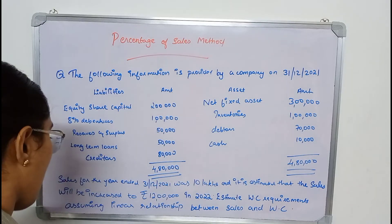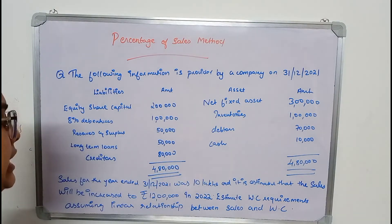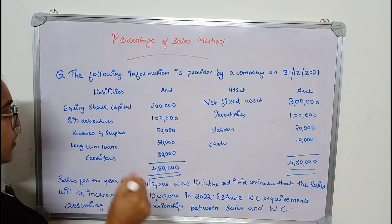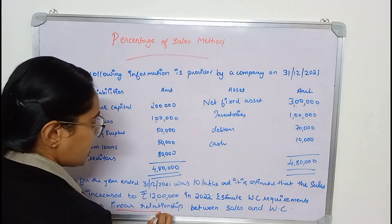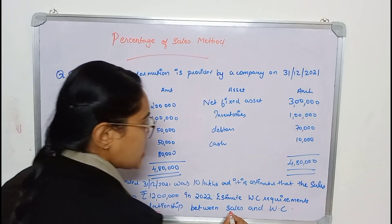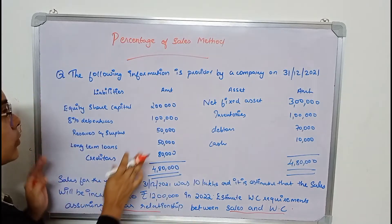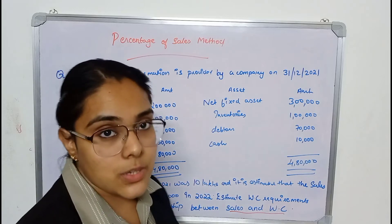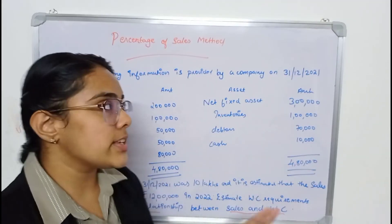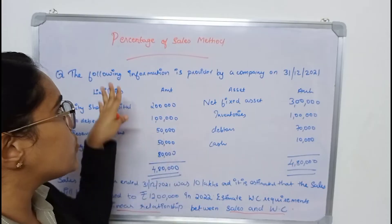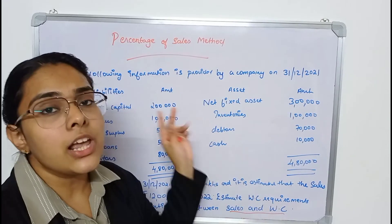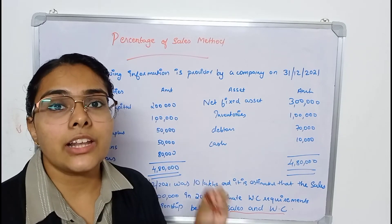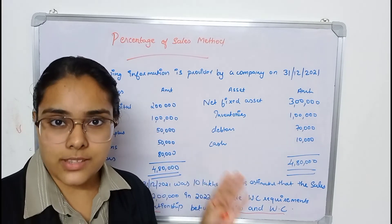Estimate working capital requirements assuming a linear relationship between sales and working capital. You are provided with the balance sheet of the previous year and asked to estimate working capital as per the percentage of sales method. The first step is to identify the increase in the sales amount.